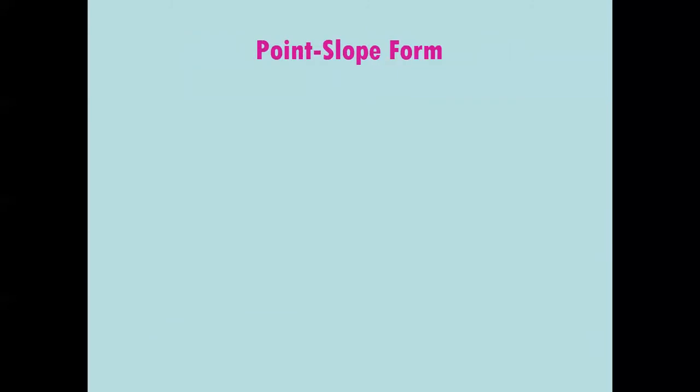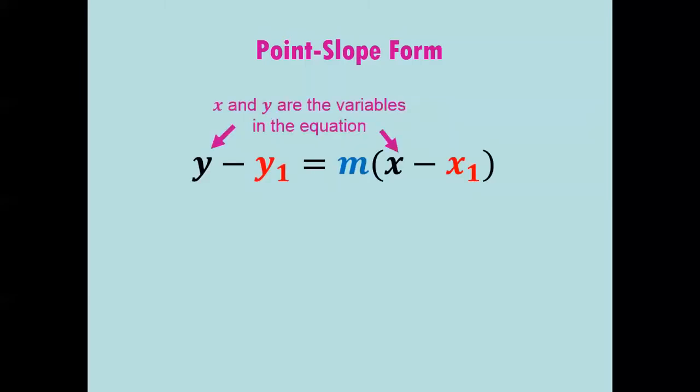All right, another form is called point-slope form. It's called this because you can look at it and see the slope, but also see a point on the line. This is what it looks like. Note that the black y and x are the variables in the equation. Just like y equals mx plus b, there was a y and an x in our equation, and there's one in this as well. So the black y and x, and the subtraction signs and equal sign and parentheses are all basic part of the equation that will always be there.